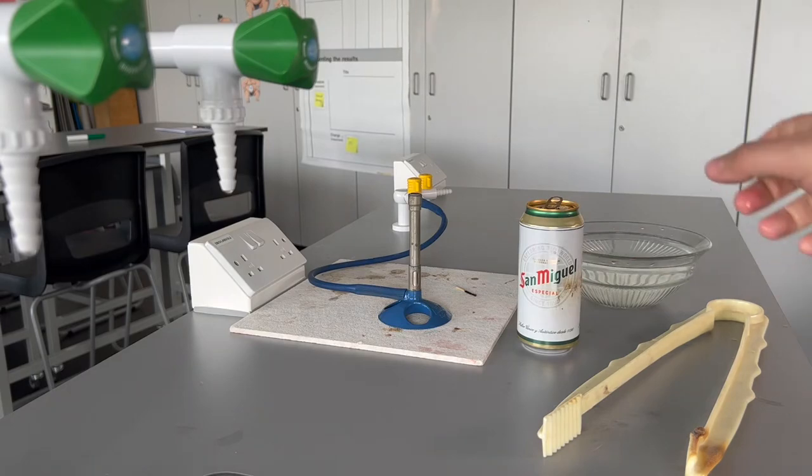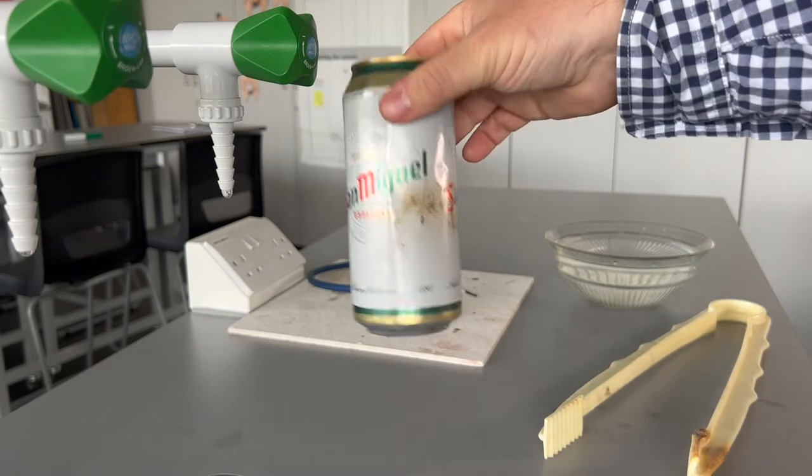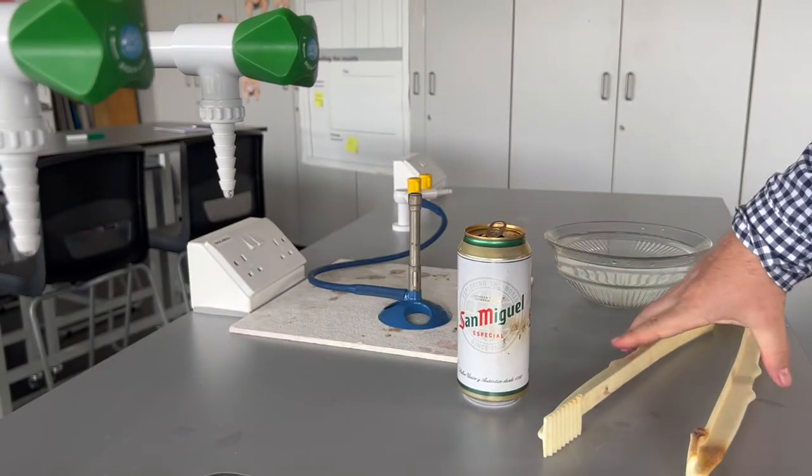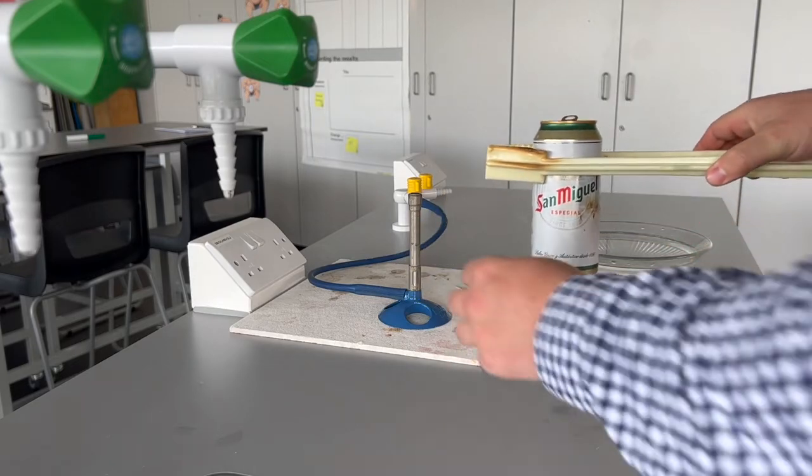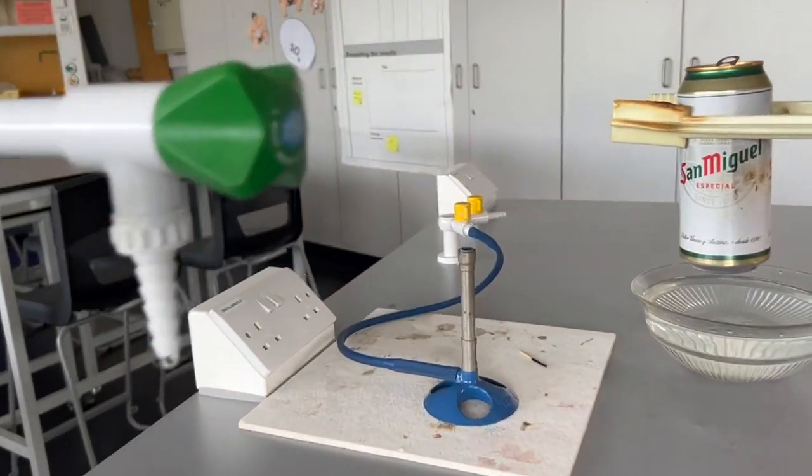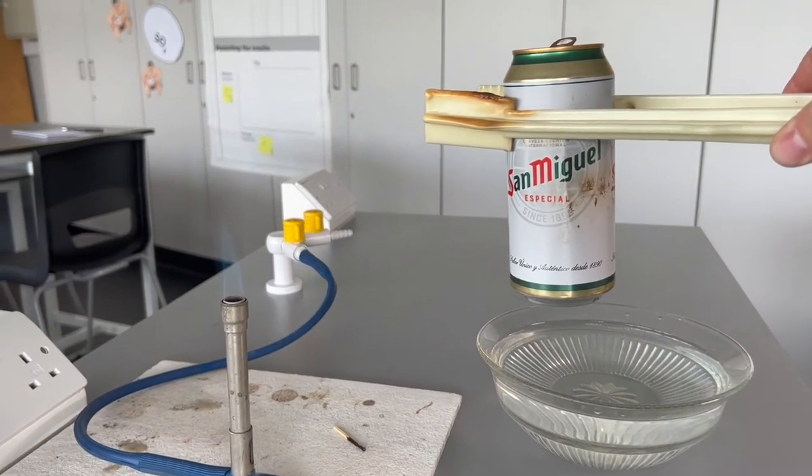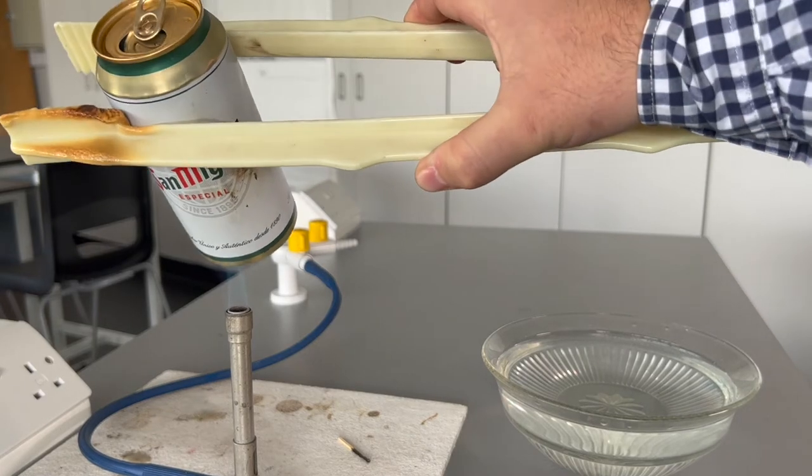What I'm going to do is put a small amount of water into my drinks can, just a very tiny amount like that. That's going to boil when I hold it with my tongs in a roaring Bunsen flame. As the water boils it is going to fill up the can with steam.